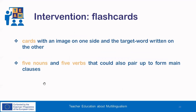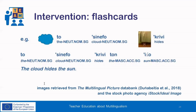So let's see each one of the teaching interventions in more detail. Firstly, concerning flashcards, the pupils were given cards with a picture on one side and the target word written in Greek on the other side. They were given a card for each target word, and were taught 10 words in total through flashcards — 5 nouns and 5 verbs. An aim of the given intervention was also to form short sentences with the words taught. Here we can see an example: one of the nouns taught was 'cloud' and one of the verbs was 'hides.' As you can see, the children would not even need to change anything in the form of the target words in order to create a sentence.